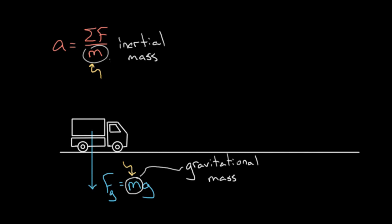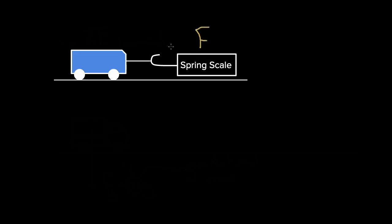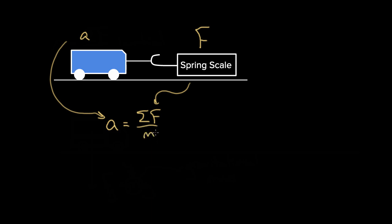So this is good to keep in mind. If you're going to do an experiment, you'll typically be measuring either inertial mass or gravitational mass. How would you know which one? If you use a simple experiment — take a spring scale, measure the force you're exerting on a cart, then measure the acceleration of that cart using meter sticks and stopwatches or a motion sensor, and plug this into Newton's second law — the m you solve for is in the denominator of Newton's second law. That means you just solved for inertial mass.